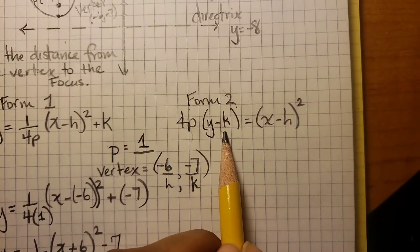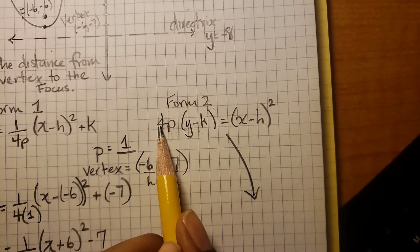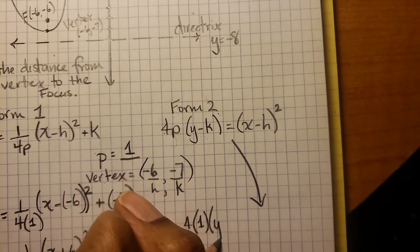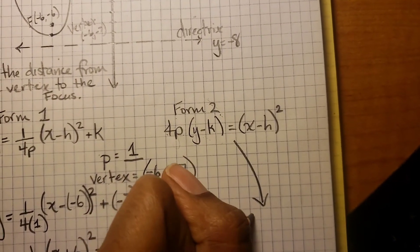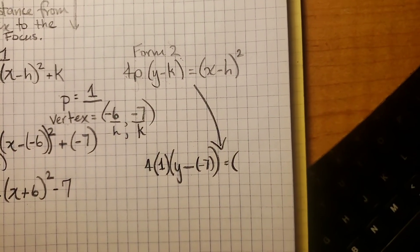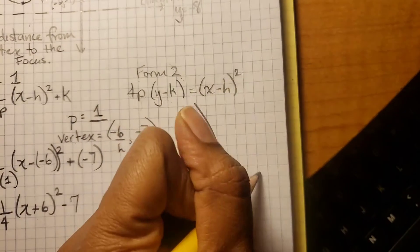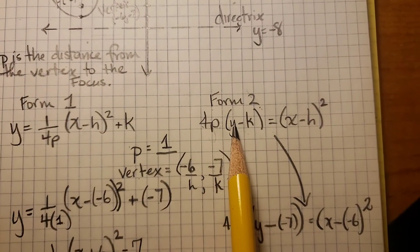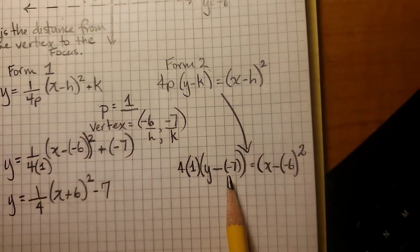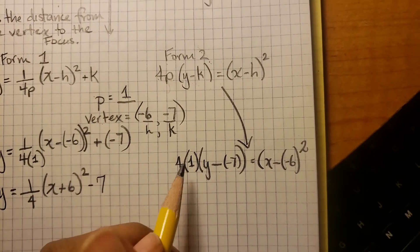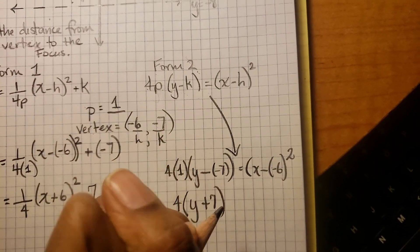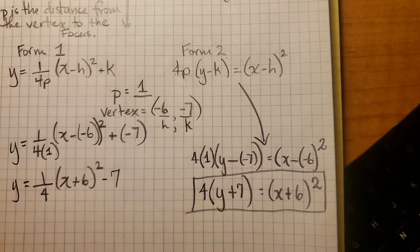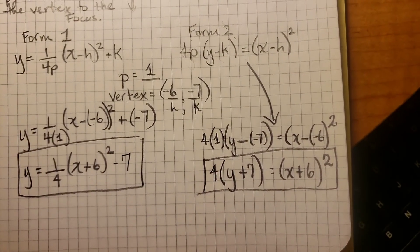Or you could use this form. This form is going to be 4p(y - k) = (x - h)². 4 times p is 4, so 4(y - (-7)) = (x - (-6))². The only difference between these two forms is here y is by itself and here y is not. So let's simplify: 4(y + 7) = (x + 6)². So this is your answer, or the previous form is your answer - Delta Math would accept either one.